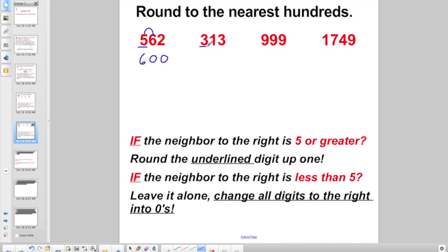3 is the digit in the hundreds place. Look to my neighbor to the right. He's less than 5. So let's just keep him as 3 and fill in everything else as 0s. Because 313 is closest to 300.